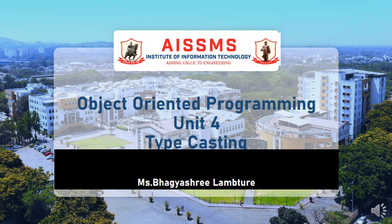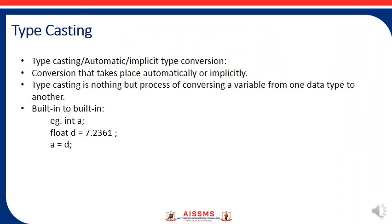Hello everyone, I'm from ASSMS IIT. Here we are discussing type casting in C++. Type casting is the automatic or implicit type conversion that takes place automatically, or the process of converting a variable from one data type to another — whether that is built-in to built-in, or class type to built-in type, or built-in to class type.